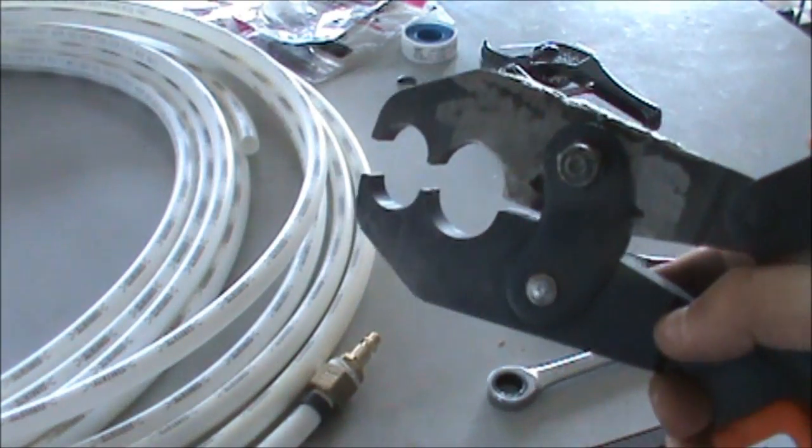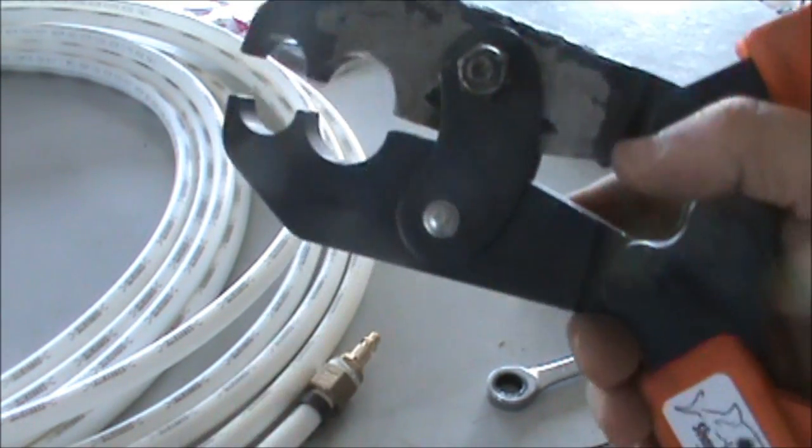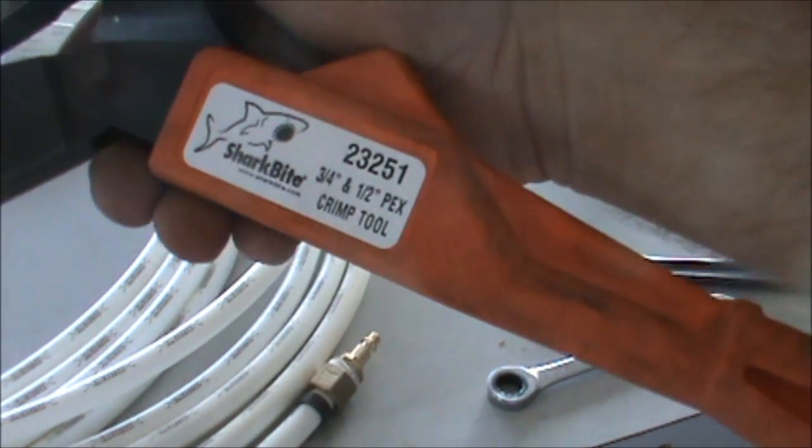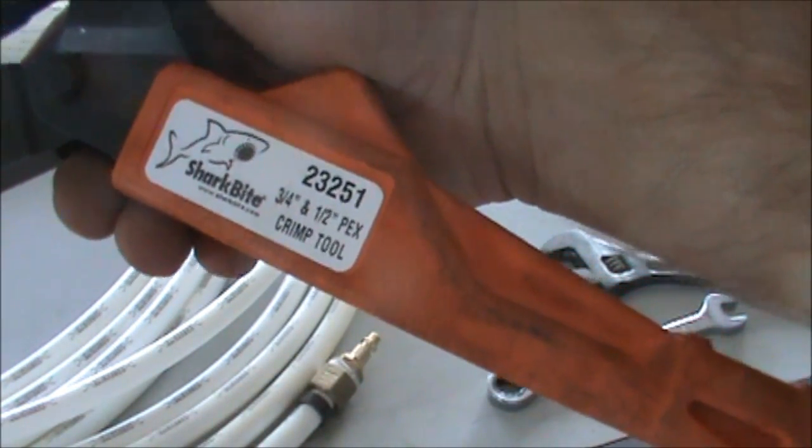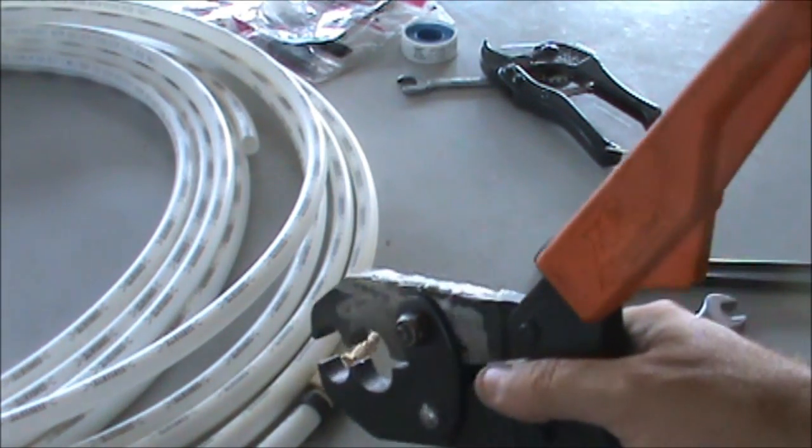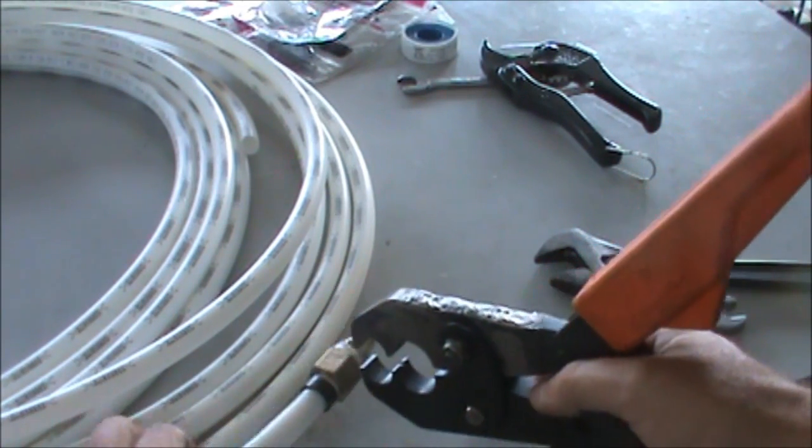So it looks a little rough but anyhow, this is for three quarters, this one's for half inch. This tool, it's called a Shark Bite three quarter half inch PEX crimp tool, number 23251. You can get it at Home Depot for about 70 bucks I think. Alright, so we'll show you how to crimp this thing.